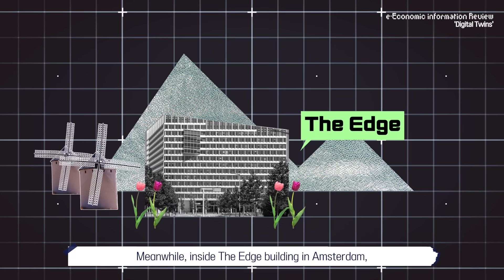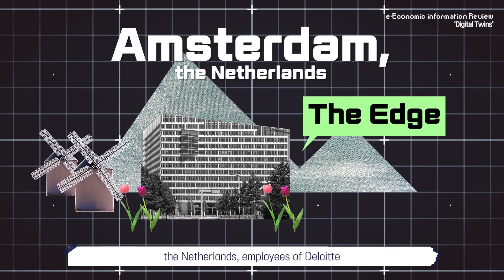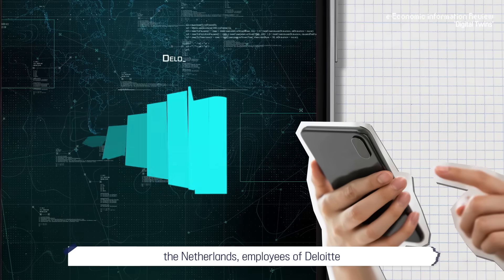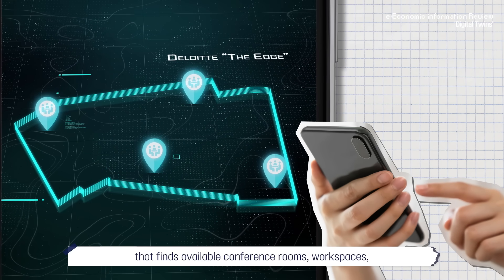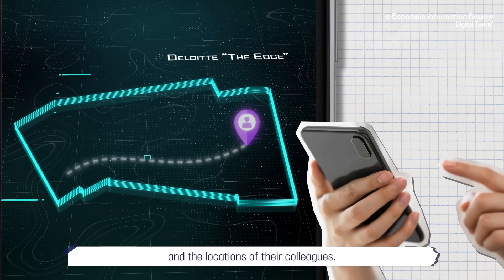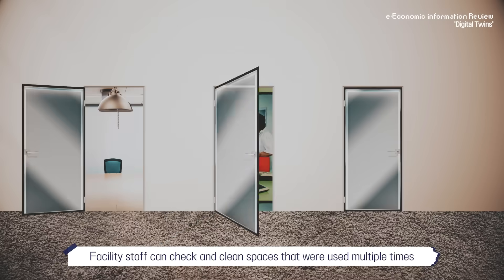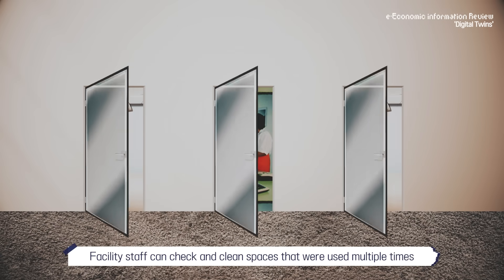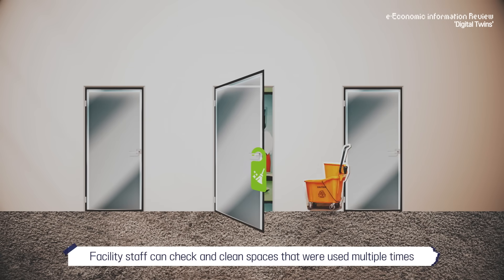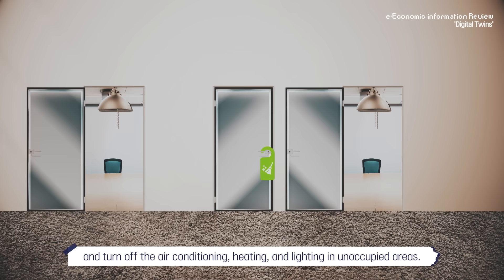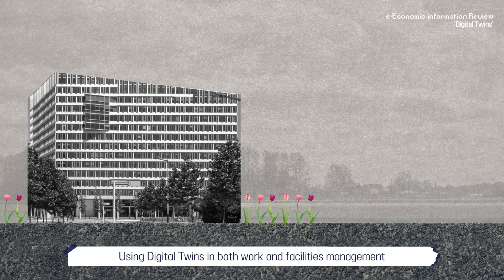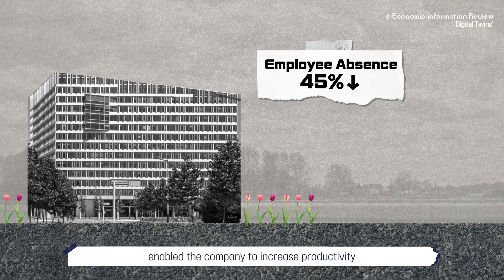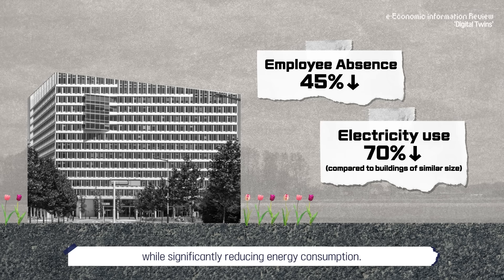Meanwhile, inside the Edge Building in Amsterdam, the Netherlands, employees work and communicate efficiently through an exclusive app that finds available conference rooms, workspaces, and the locations of their colleagues. Facility staff can check and clean spaces that were used multiple times and turn off the air conditioning, heating, and lighting in unoccupied areas. Using digital twins in both work and facilities management enabled the company to increase productivity while significantly reducing energy consumption.